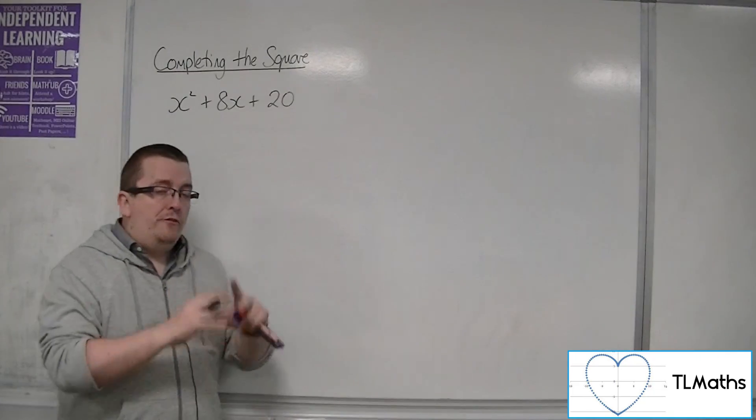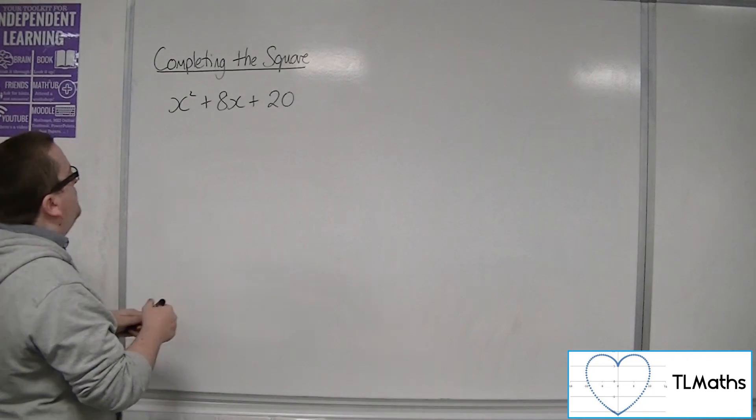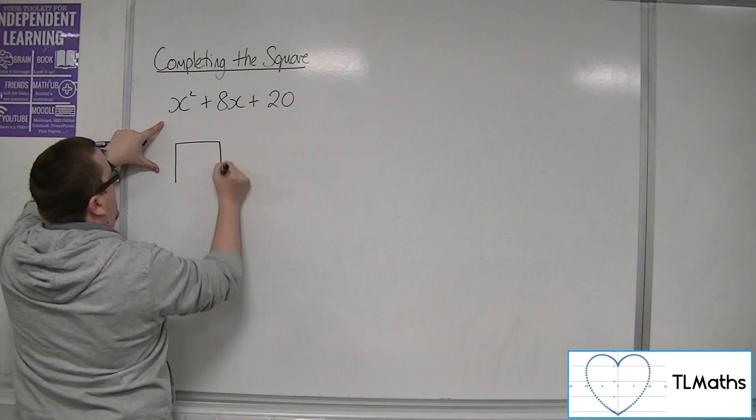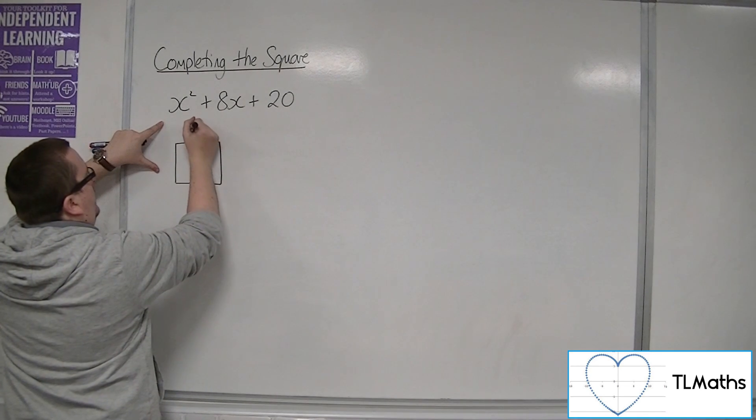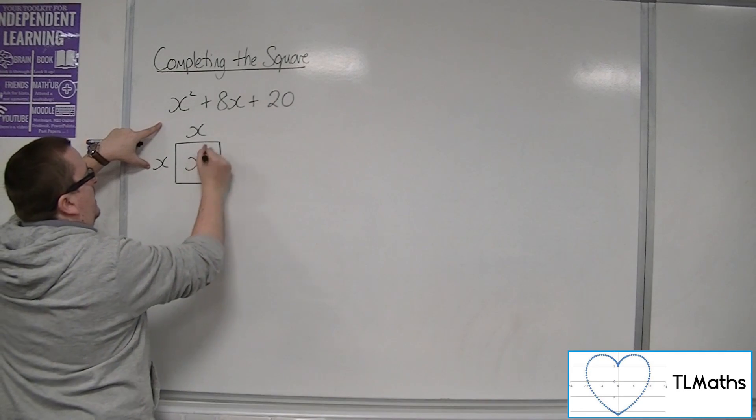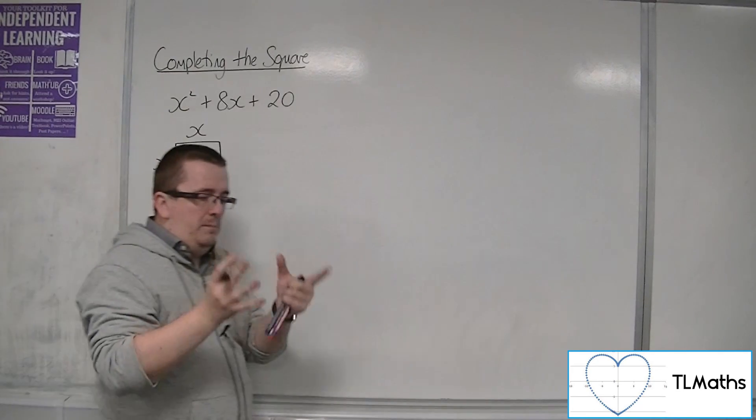If we thought about this visually, then we could draw the x squared as a little square that is of side length x times x, because that would make our x squared. It's some little square.